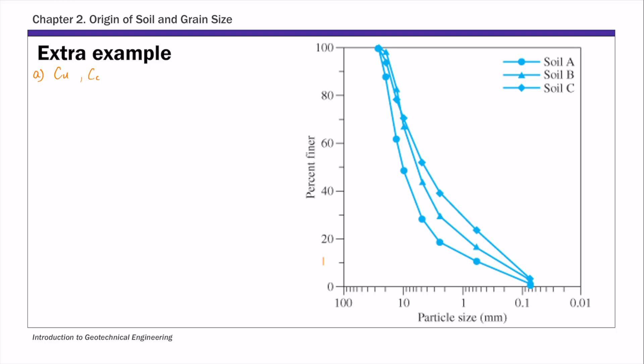d10, by definition, is the particle size corresponding to 10% finer. First, find that 10% finer value on the y-axis, then draw a horizontal line to find the corresponding particle size or particle diameter. You have three particle size distribution curves, each corresponding to one soil sample, so you have three d10 values: one for soil A, one for soil B, and one for soil C.